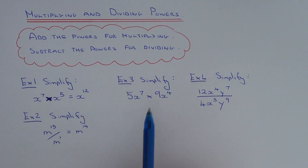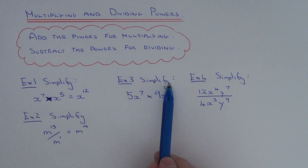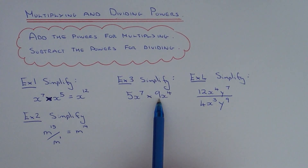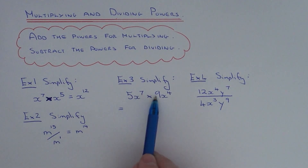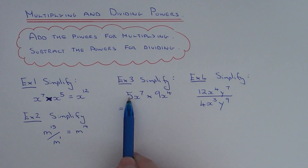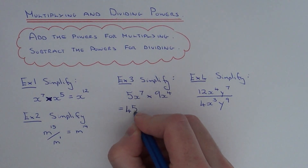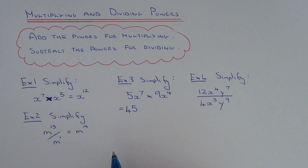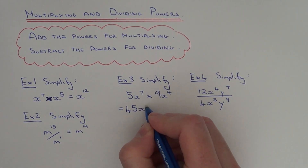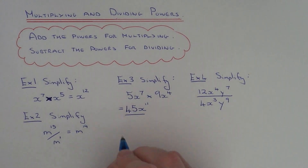So let's move on to example three — this one is a little bit harder. We have to simplify 5x to the power of seven multiplied by 9x to the power of four. The first thing to do is just multiply the numbers together — don't add these as they aren't powers. So we just do 5 times 9 which is 45. Then we multiply x to the power of seven by x to the power of four. We are multiplying the terms, so we add the powers: seven add four is eleven, giving us 45x to the power of eleven.